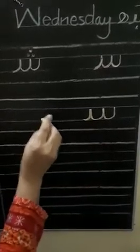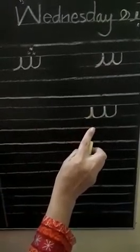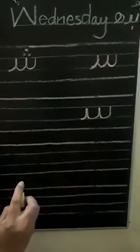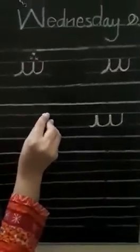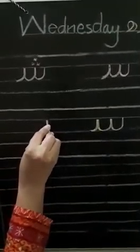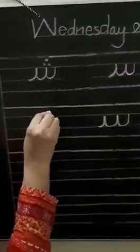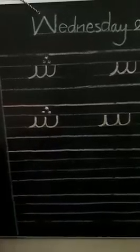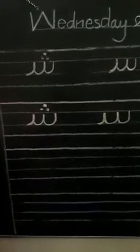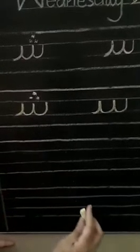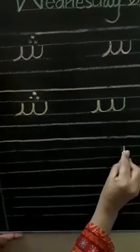Seen. The sound of Seen is S. How many candies does Seen have? Seen has no candy. Write again. This is Sheen. How many candies does Sheen have? Sheen has three candies. The sound of Sheen is Sh.